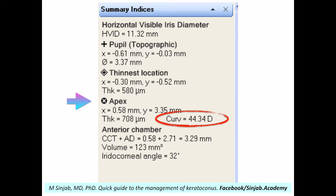There is another difference in the Cyrus, which is the term of the Apex. The Apex in the PENTA-CAM and the Galilei corresponds to the anatomical center of the cornea. But in the Cyrus, it corresponds to the point where the maximum K-reading is. So whenever we see the Apex in the Cyrus, it is not the anatomical center of the cornea — it corresponds to the K-max.